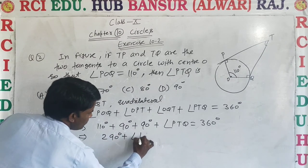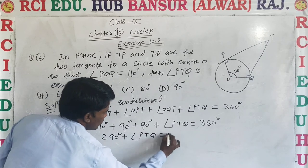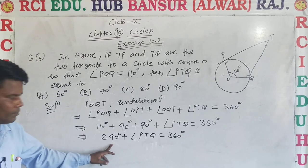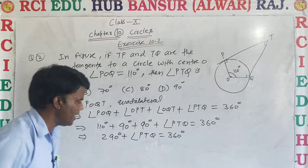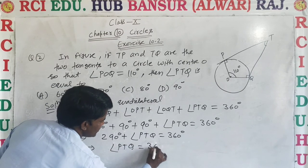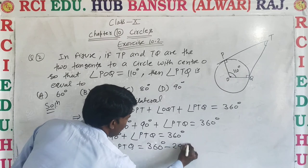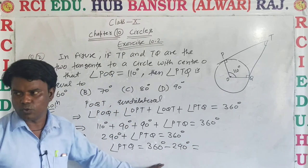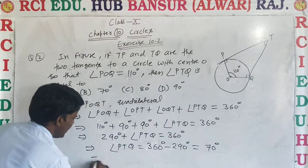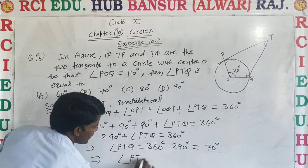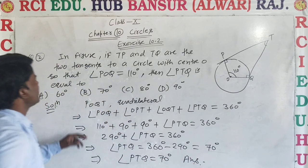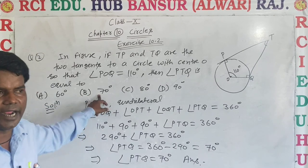Transferring 290 to the other side: angle PTQ = 360 − 290 = 70 degrees. Hence angle PTQ equals 70 degrees. The correct answer is option B, 70 degrees.